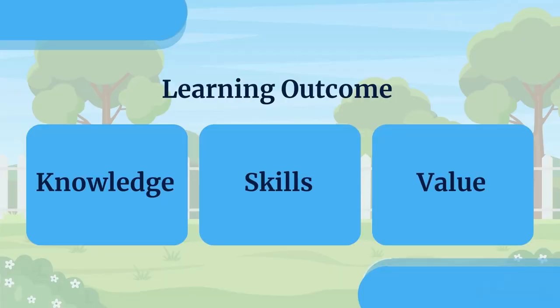In this video, we are focused on a lot of animals and a lot of developmental domains. We are going to start. In this video, we have made learning outcomes in three categories: Knowledge, Skills, and Values.